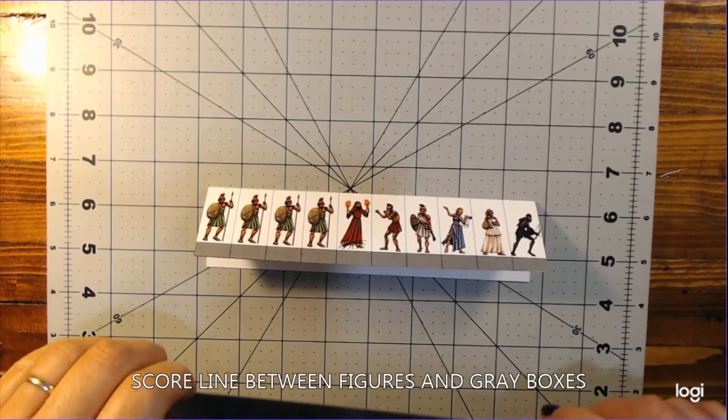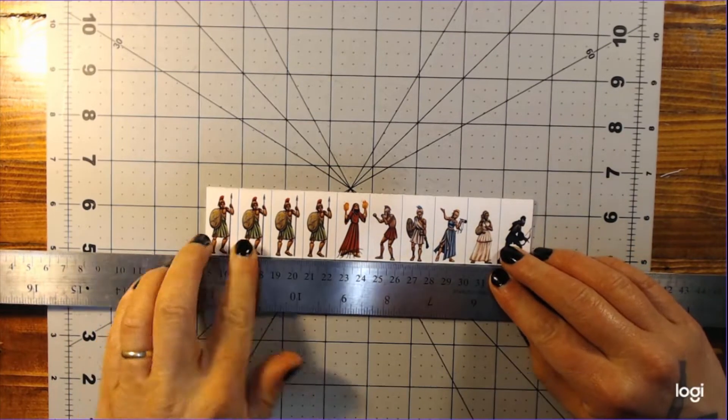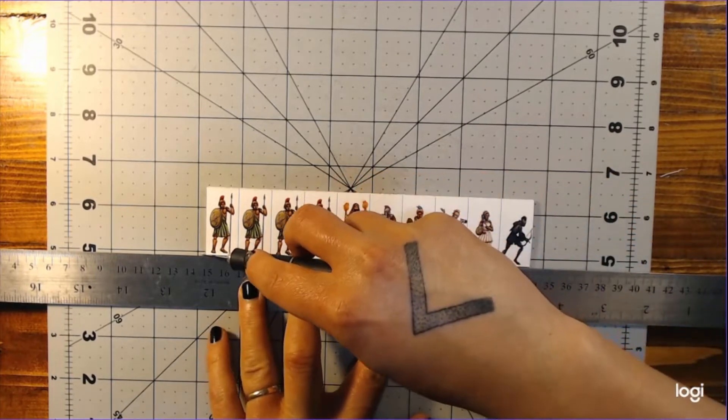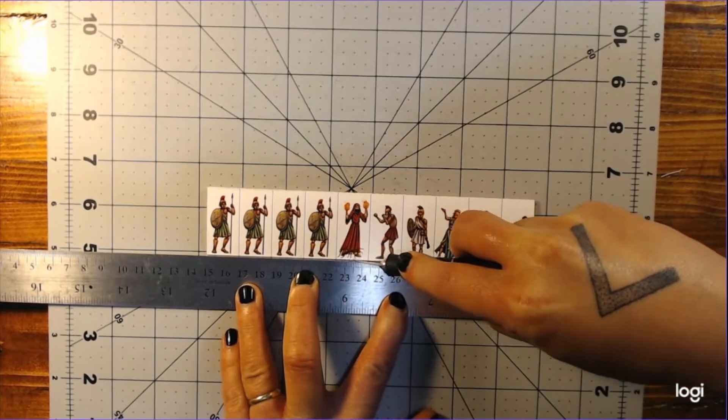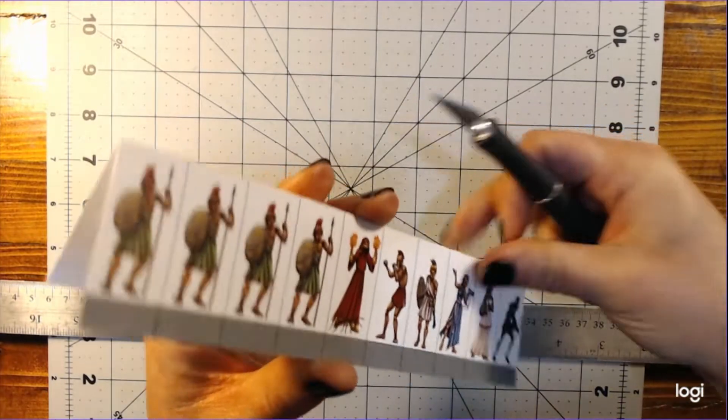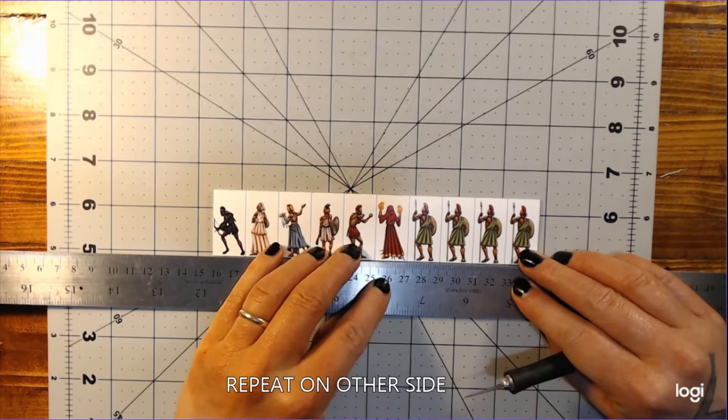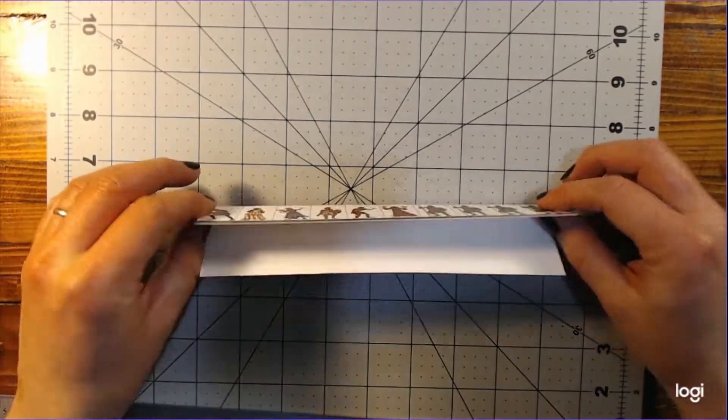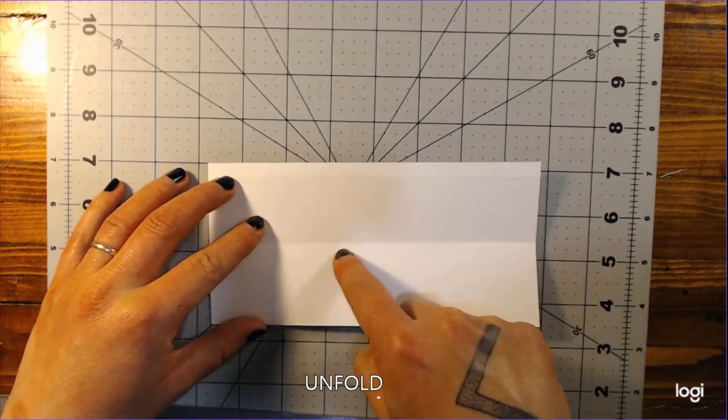Next, you will have to score the line between the figures and the grey boxes at the bottom. These grey boxes are how you attach them to their bases later, so they will need to fold to be perpendicular to the figures. Just like last time, you want to use the back of your blade and your ruler to score along the line, and then repeat this on the other side. Now, when we open the block of figures, you can see the three different score lines along the top, middle, and bottom.